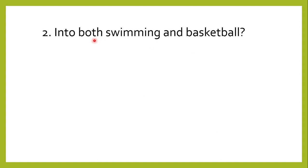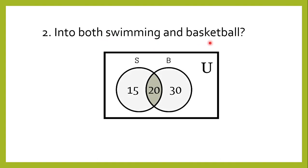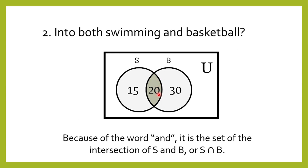Second, into both swimming and basketball. Representing that in a Venn Diagram, we shade the middle part, which is 20. Because of the word 'and,' it is the intersection of S and B — the elements that are common to both swimming and basketball. So that is 20 students.